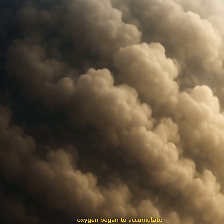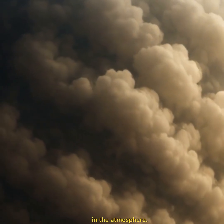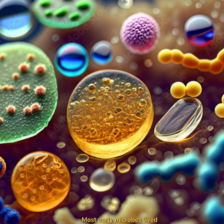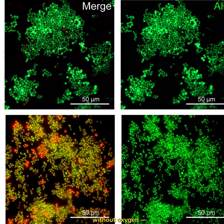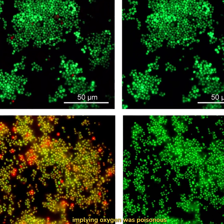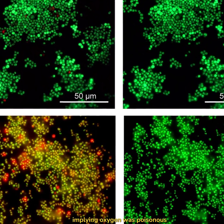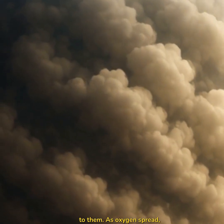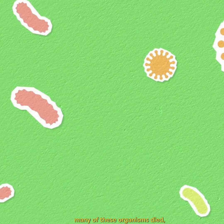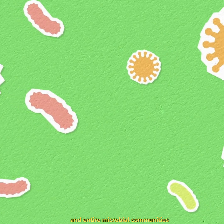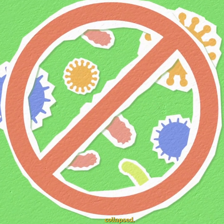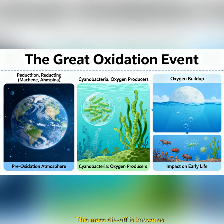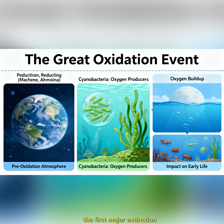Once the iron in the ocean was consumed, oxygen began to accumulate in the atmosphere. Most early microbes lived without oxygen — they were anaerobic, meaning oxygen was poisonous to them. As oxygen spread, many of these organisms died and entire microbial communities collapsed. This mass die-off is known as the oxygen catastrophe, or the Great Oxidation Event, the first major extinction in Earth's history.